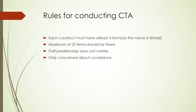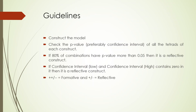What are the rules for conducting CTA? Each construct must have at least four items — the name 'tetrad' itself suggests this minimum. A maximum of five items should be there, and the path relationship does not matter; the only concern is about the covariance.